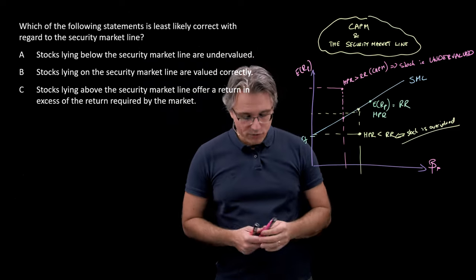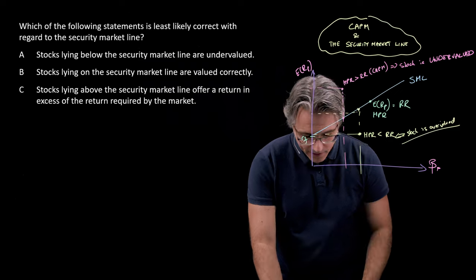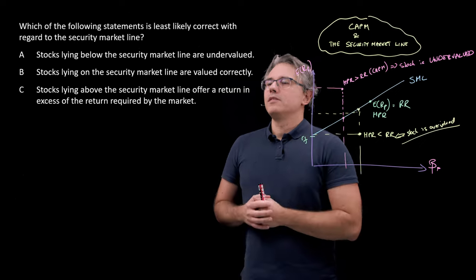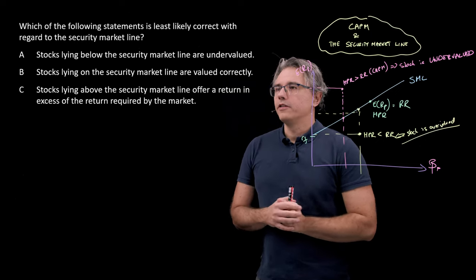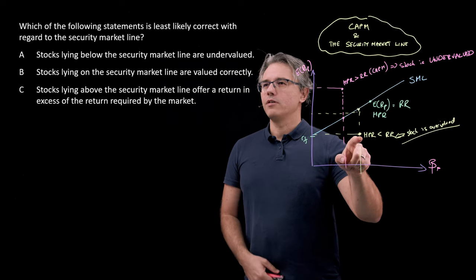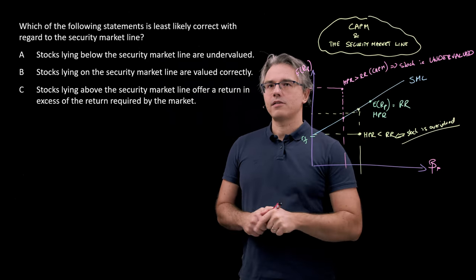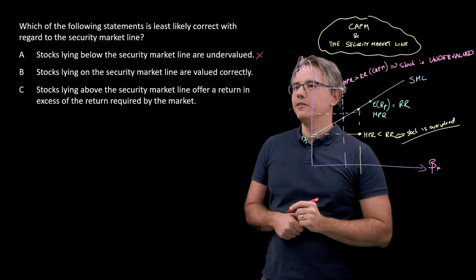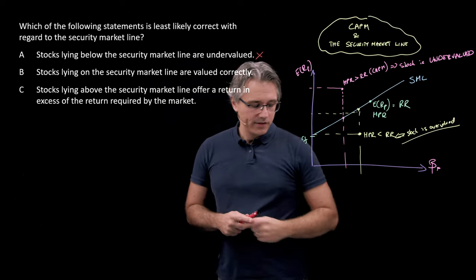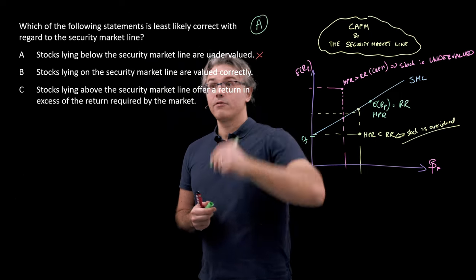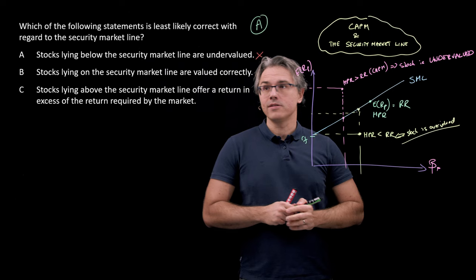So, let's see which one of these answers is actually in line with what we just wrote down. Stocks, well, we're looking for the one which is least likely correct, so the wrong one effectively. Stocks lying below the security market line, such as this one, are undervalued. No, that's wrong, definitely wrong, because they are actually overvalued. So, we've already identified the answer to this question. It's going to be A. It's incorrect, making it the answer to this question.